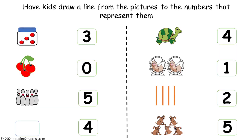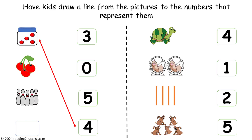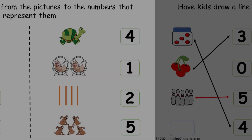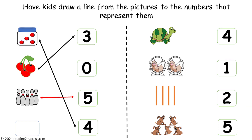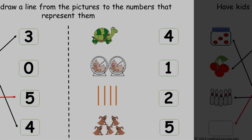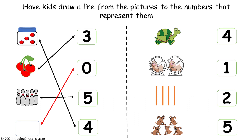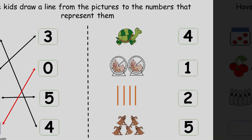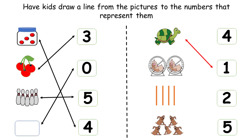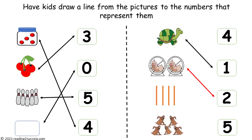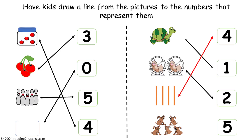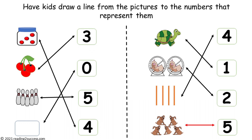Now have kids draw a line from the pictures to the numbers that represent them. A line was drawn from the four dots to the number 4, the three cherries to the number 3, the five bowling pins to the number 5, the empty blank space to the number 0, the turtle to the number 1, the hamsters to the number 2, the tally marks to number 4, and the dogs to number 5.